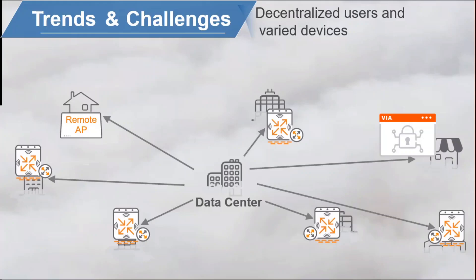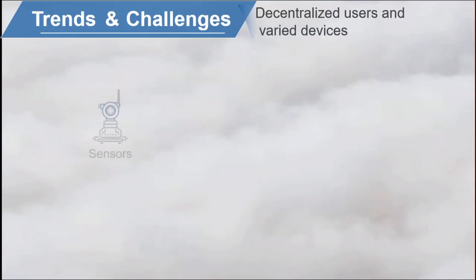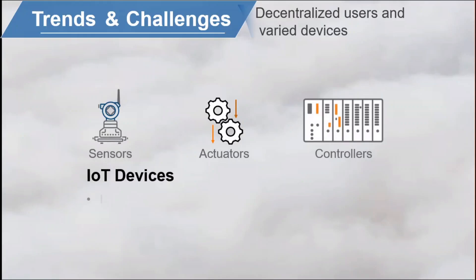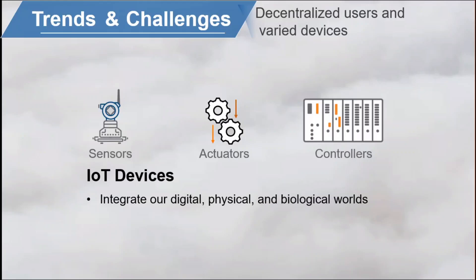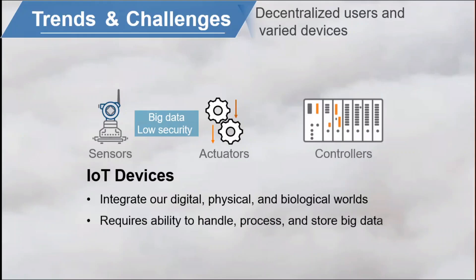For deeper insight and control, you can integrate with endpoint management systems, perhaps with user entity and behavior analytics or UEBA. These endpoint issues become even more challenging with the proliferation of Internet of Things or IoT systems, which often consist of sensors, actuators, and controllers that help to integrate our digital, physical, and biological worlds. Sensors can detect nearly anything — water pressure, heat, smoke alarm, proximity of expensive equipment, and valuable humans, whether somebody is waiting at a traffic light or crosswalk. These systems can create a lot of data and can lack security features. As IoT systems proliferate, we must respond with the ability to efficiently handle, process, and store big data. We must keep these devices available with good redundancy and tight security. Imagine a hacker accessing some unexpected IoT device and using it as a launch pad to attack the rest of your internal systems.